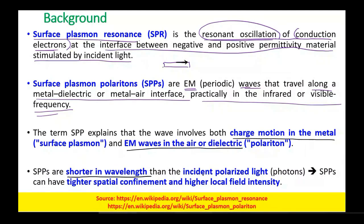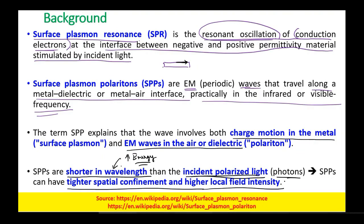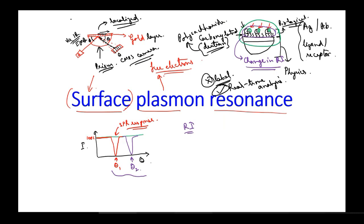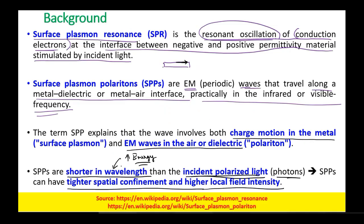The SPPs — surface plasmon polaritons — are shorter in wavelength than the incident polarized light (the photons). A shorter wavelength means an increase in energy intensity. This is because SPPs can have tighter spatial confinement and higher local field intensity. These signals which are being generated are highly localized, and since they are highly localized, they have a higher local field intensity at the point where the light is made incident.